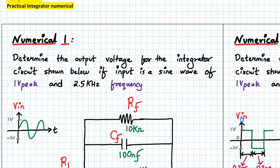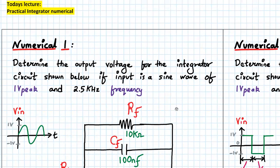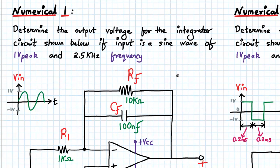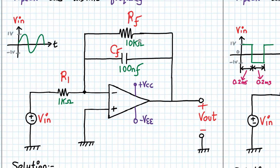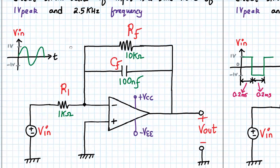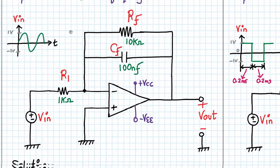Numerical number one: we have to determine the output voltage for the integrator circuit shown below if the input is a sine wave of one volt peak and 2.5 kilohertz frequency. The integrator circuit has RF value of 10K, CF value of 100 nano, and R1 value of 1 kilo ohm.